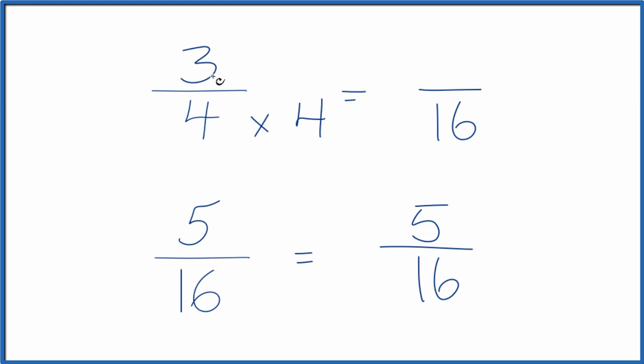We can't just multiply the denominator here by 4, though. We also need to multiply the numerator by 4. 4 over 4 is 1, so we're just multiplying 3 fourths by 1. It's still equivalent to 3 fourths, just represented differently.